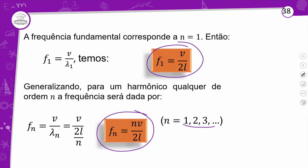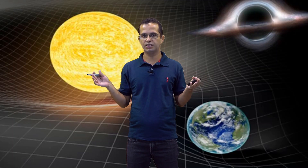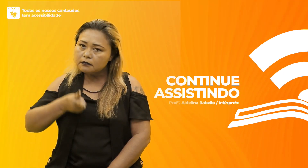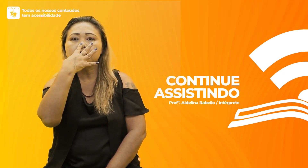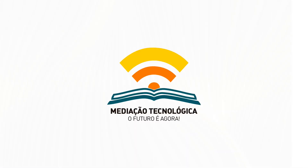Lembrando: na corda são dois nós. Um tubo pode ser fechado em um lado e aberto no outro — nó e ventre — ou os dois lados abertos. Agora vocês vão lá fazer as atividades. Beleza, fizeram as atividades, então agora vamos fazer as correções.